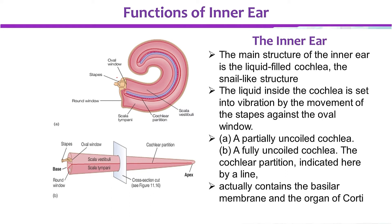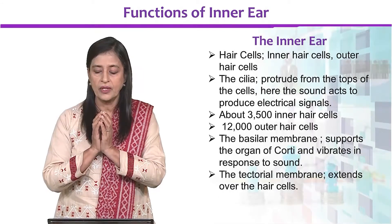Vibrations at the oval window cause it to vibrate. If we look at this figure, it shows a partially uncoiled cochlea. If you fully uncoil it and spread it out flat rather than spiral, this is the shape it takes. There is a basilar membrane, a layer, and the organ of Corti is found in the inner ear.